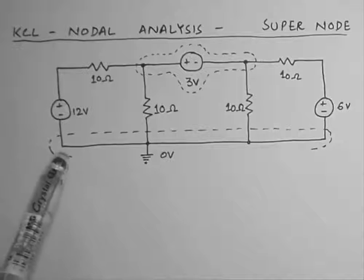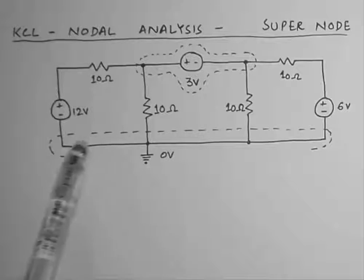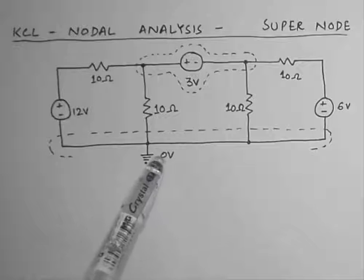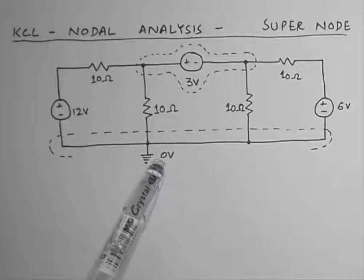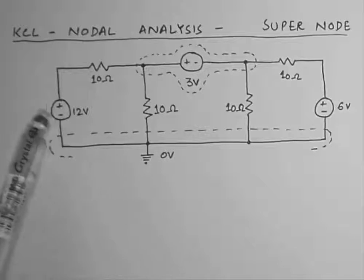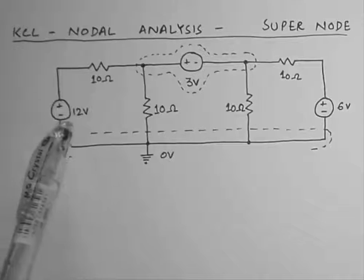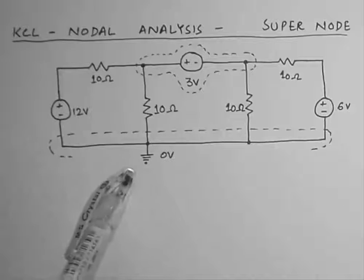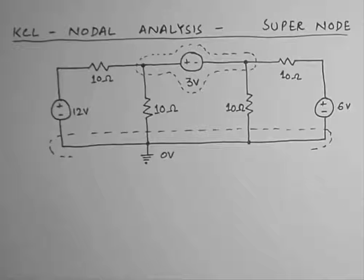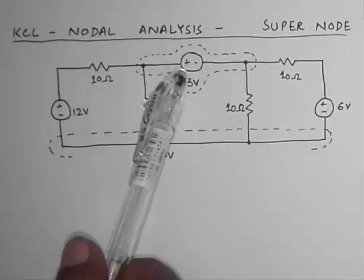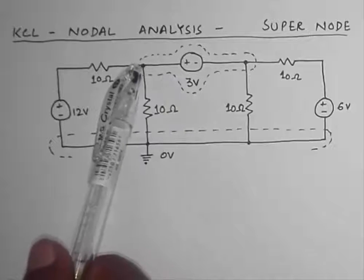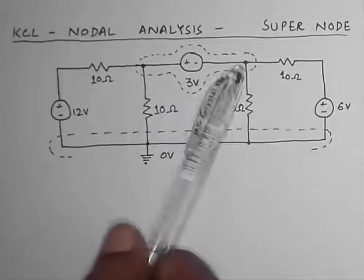You can see in this circuit — first of all I have selected this whole node as a reference node, or a ground node, or a zero volt node, because there are most of the elements connected to this node: 1, 2, 3, and 4 elements connected to this node. Next, there is another voltage source over here.